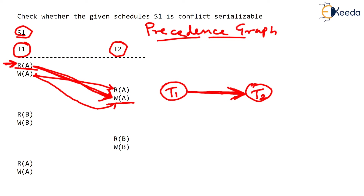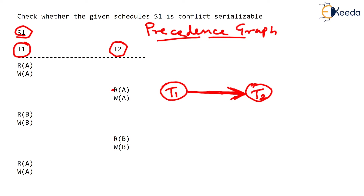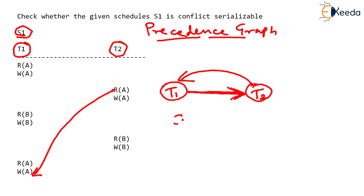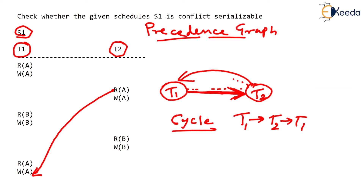Continuing with the next conflicting operations: in T2 there is read A, and later in T1 there is write A. So this conflict — read A in T2 and write A in T1 — goes from T2 to T1. We show a directed edge from T2 to T1. Now wait a minute: we can go from T1 to T2 and then T2 to T1. Clearly there is a cycle in the precedence graph.